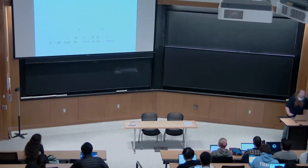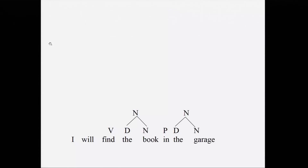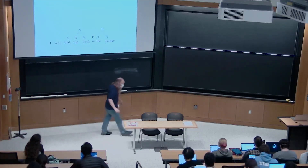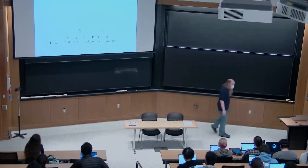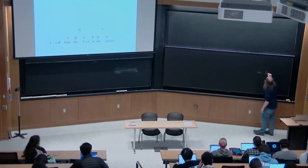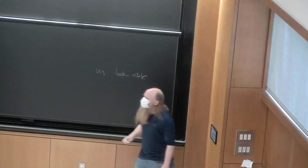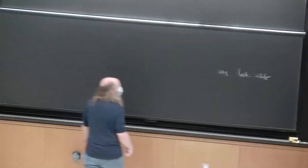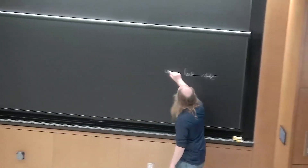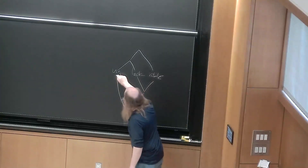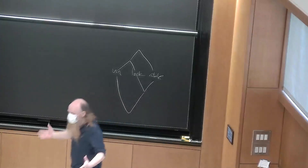Last time we started doing syntax and drawing trees. When we were doing morphology and looking at words like 'unlockable,' we were convincing ourselves it was profitable to think of words not just as consisting of three morphemes — 'un,' 'lock,' and 'able' — but that it's useful to think of these morphemes as being composed in pairs. There are two ways to make 'unlockable' and those mean different things.